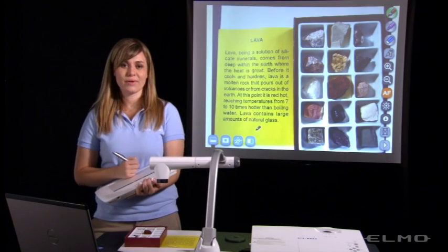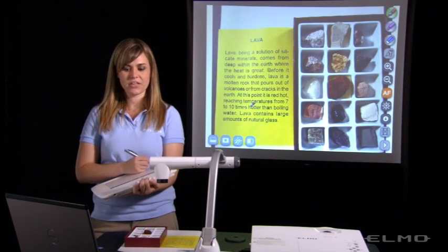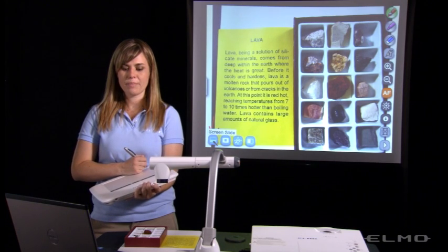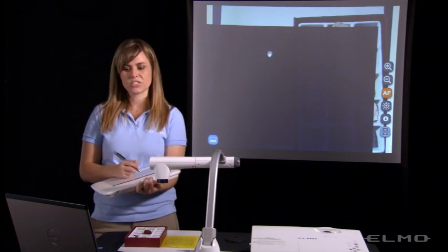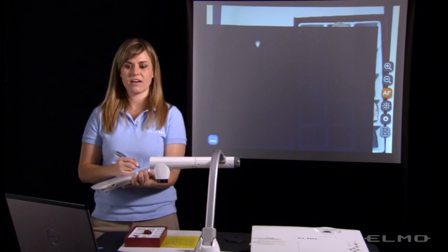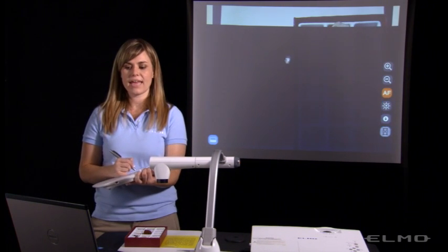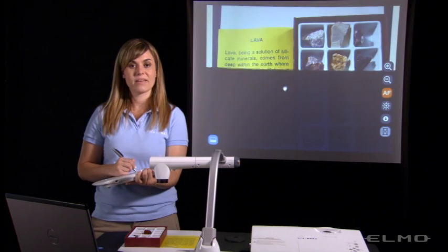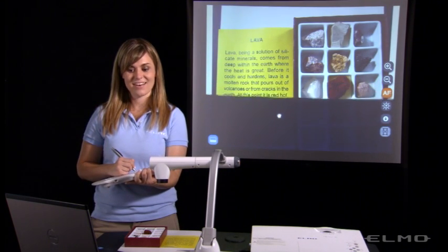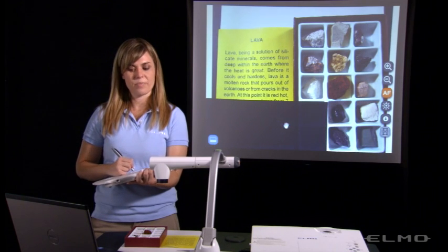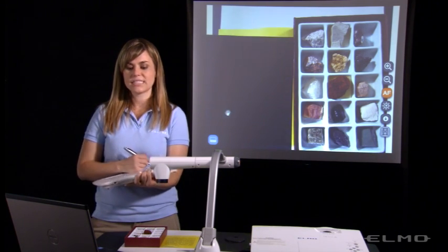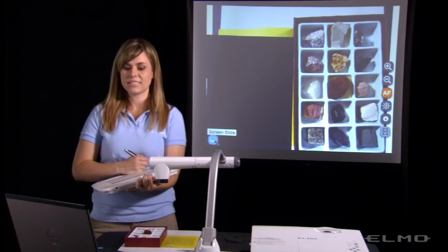In the lower left hand corner, we have some presentation tools for you to use. This first one is a mask. When I tap on the mask or screen slide, the mask will appear. And then I can use my pen to drag this mask around. So now for reading text, everybody can follow along on the same line or I can cover up answers and show them when I'm ready. Just press the same icon here to take the mask off.